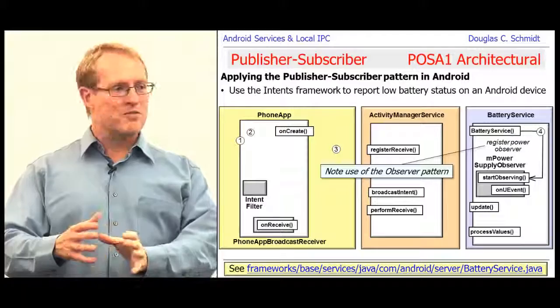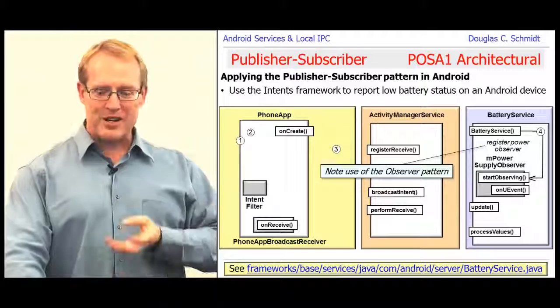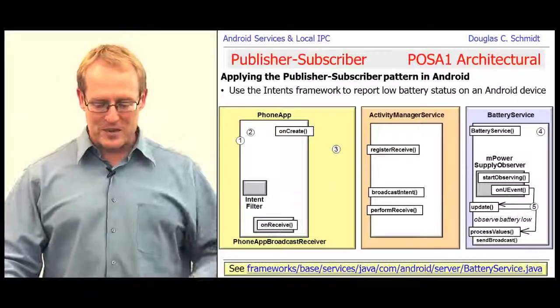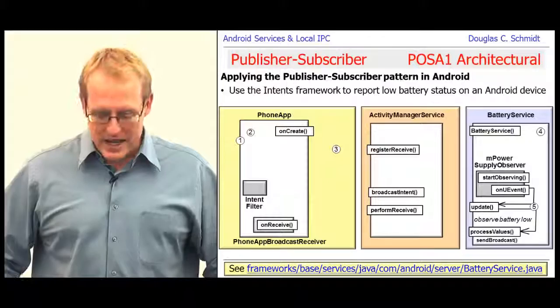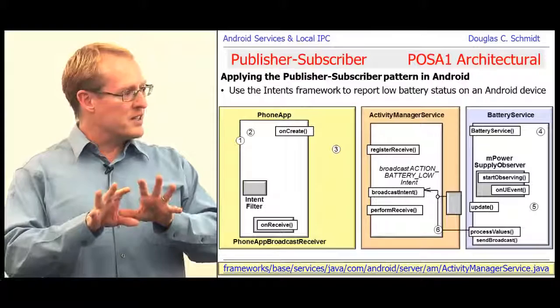When the low-level driver discovers the battery is low, it calls back on the onUEvent callback method using the observer pattern. That calls the update method on the battery service, which calls processValues. The processValues method creates an ACTION_BATTERY_LOW intent and broadcasts it to anyone who cares. Various things care about this — in this particular Android 4.0 case, the phone app's PhoneAppBroadcastReceiver, which was registered for this intent, will receive the callback.